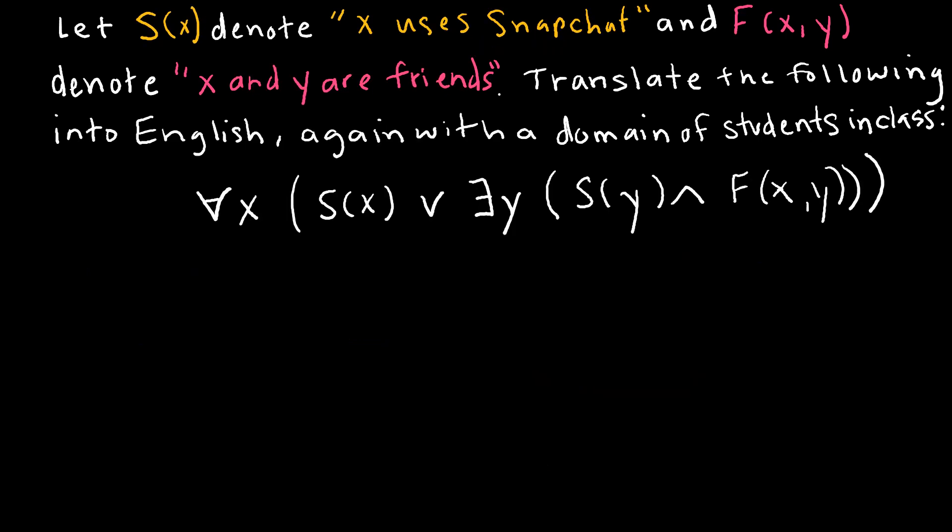Okay let's switch this up a little bit and do things backwards. So now we are given the predicates and we are instead of translating from English to predicate logic we are going backwards. So let's take a look. We know S(x) denotes x uses Snapchat and F(x,y) denotes x and y are friends. So we're going to translate into English again with the domain of students in class.